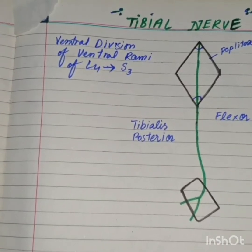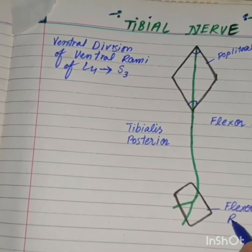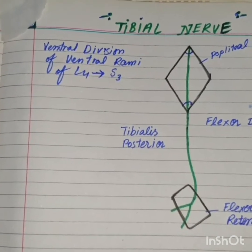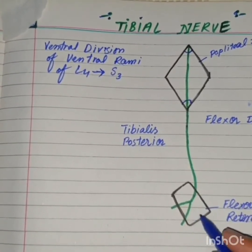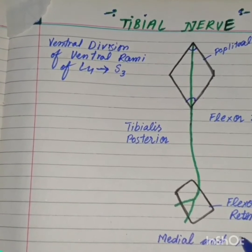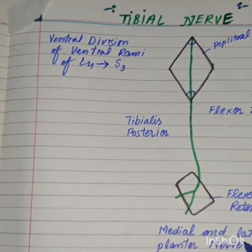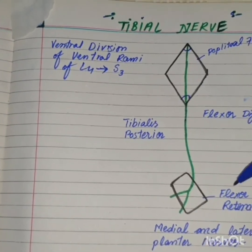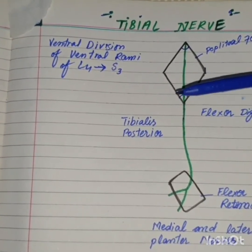It descends downward and the third landmark is the flexor retinaculum, which lies medially. It passes behind the flexor retinaculum, and at the flexor retinaculum it divides into two terminal branches known as the medial and lateral plantar nerves. So the three important landmarks are the popliteal fossa, flexor digitorum longus and tibialis posterior, and finally the flexor retinaculum where it divides into the medial and lateral plantar nerves.